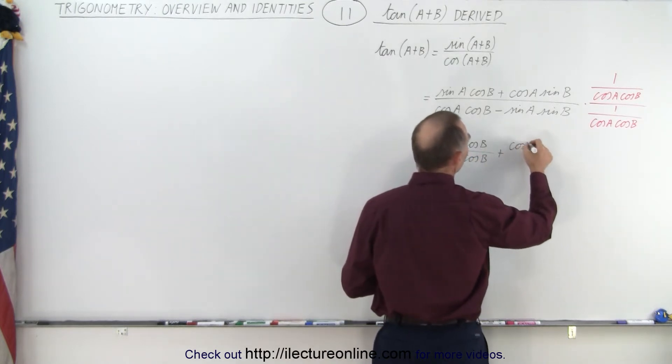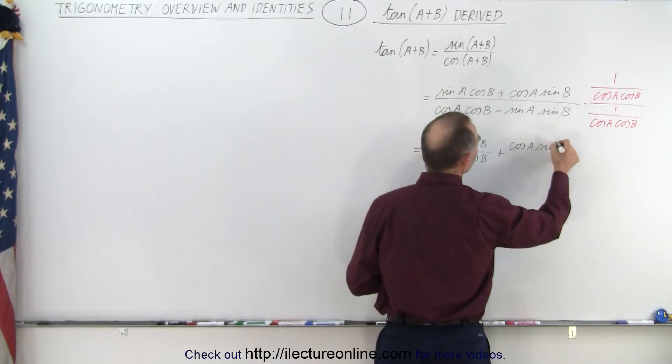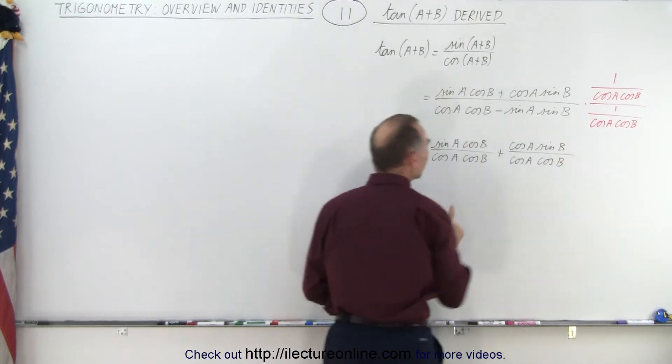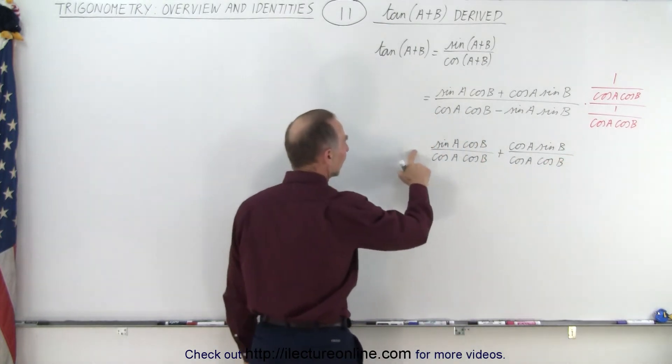here we get cosine A sine of B divided by cosine A cosine B. Now here you may begin to see why we did that.